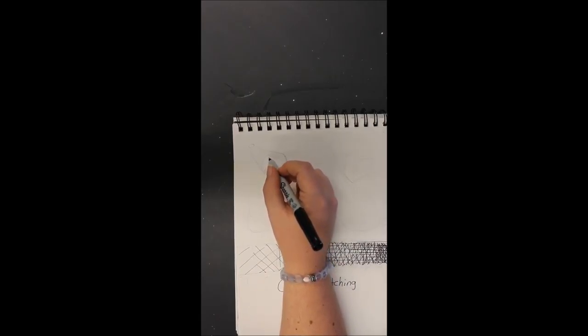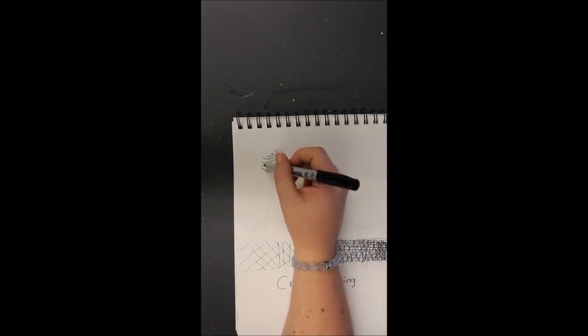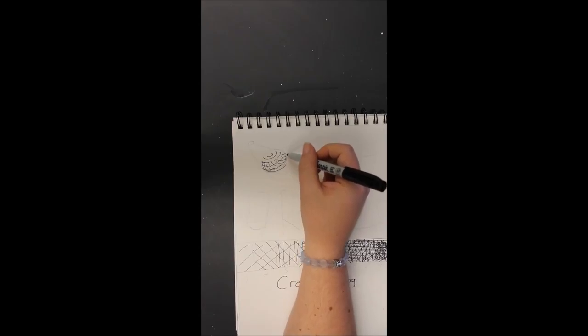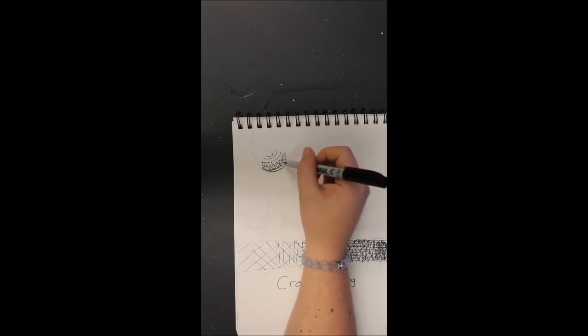So for the lightest value, I'm just going to go around like that. And then as I look at the light, it's going to be on the opposite side of that light source.